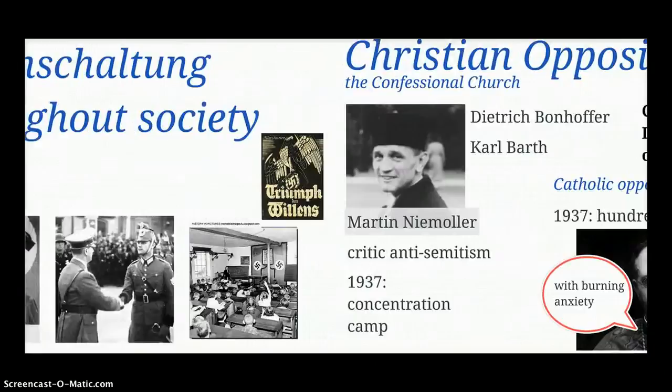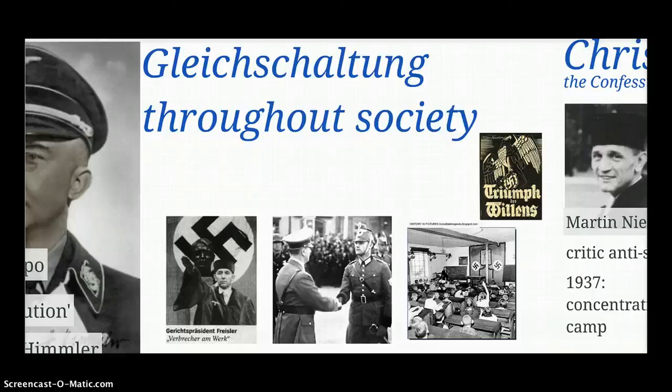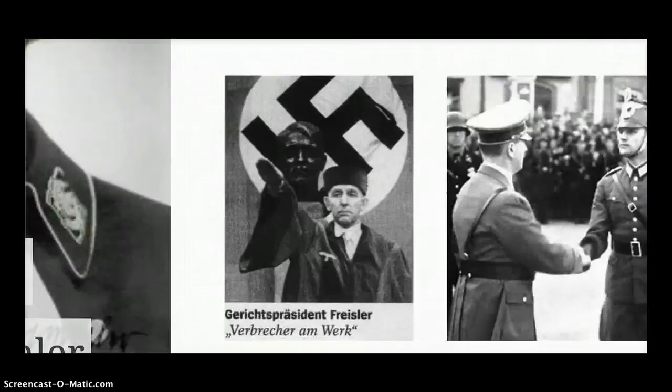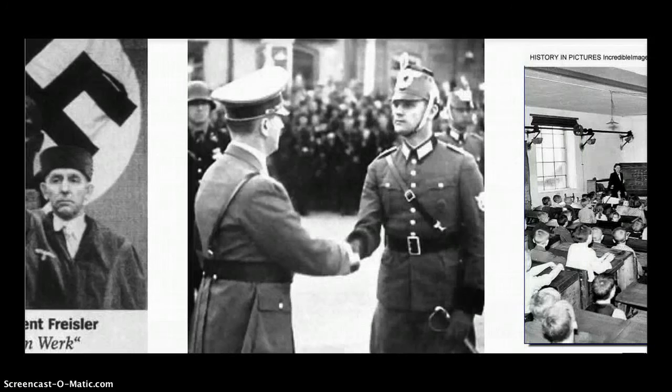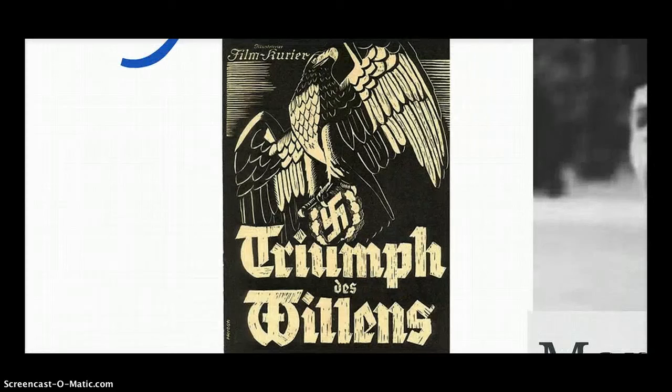Gleichschaltung throughout society involved bringing the major institutions of the state into a process of Nazification. The Nazis brought local government and the civil service into line, as well as the judiciary. Many in the judiciary were already right-leaning, but Nazification intensified — a judge called Roland Freisler was an acid Nazi supporter. The police were also brought into line with Nazi ideology, as were the education system and the mass media.